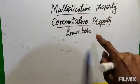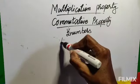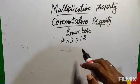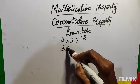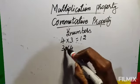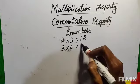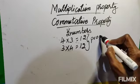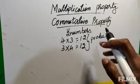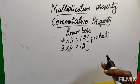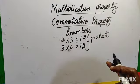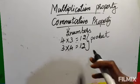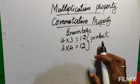So in commutative property there will be two numbers. Let me take an example: four threes are twelve. Now if you change the order of the numbers — here four was first and three was second — now we change the order: three first and four second, three fours are twelve. So when you change the order of the numbers, the product doesn't change. The product is the same. This is called commutative property. When you change the order of the numbers, the product doesn't change.